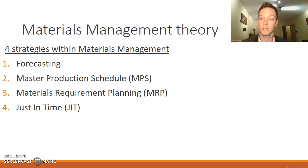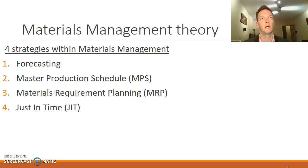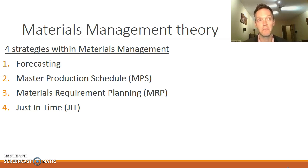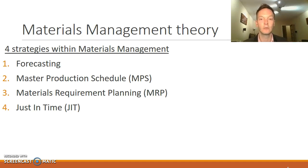Once the master production schedule is completed, materials requirements planning can then be undertaken. So if we need to produce 20 tonnes of Mars bars tomorrow, we needed to have ordered 10 tonnes of sugar, 8 tonnes of chocolate, 40 metres of wrapping, and so on — and we should have ordered that maybe three weeks ago. Materials requirements planning is about the more detailed level of what components do I need in order to fulfil my master production schedule.